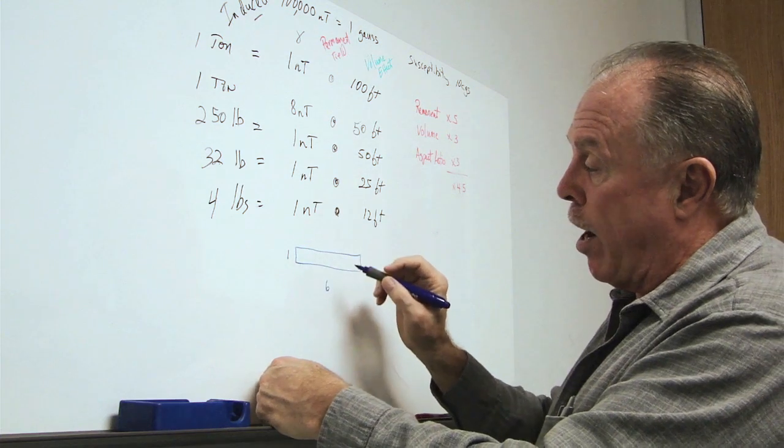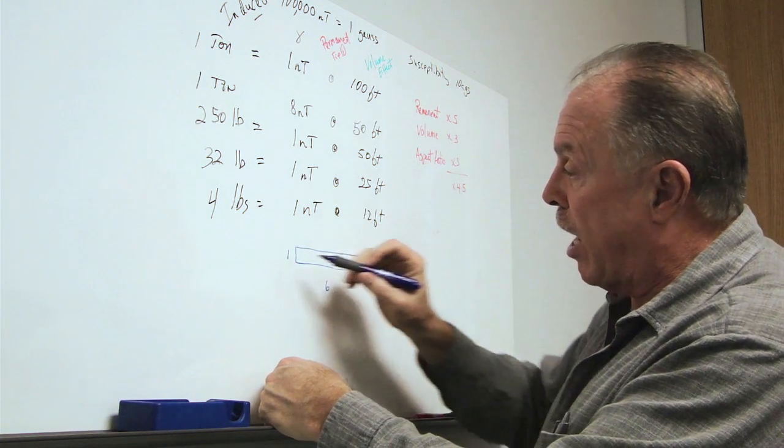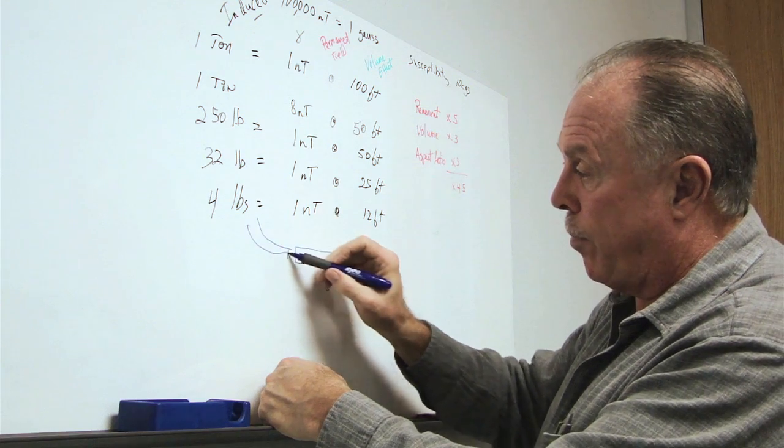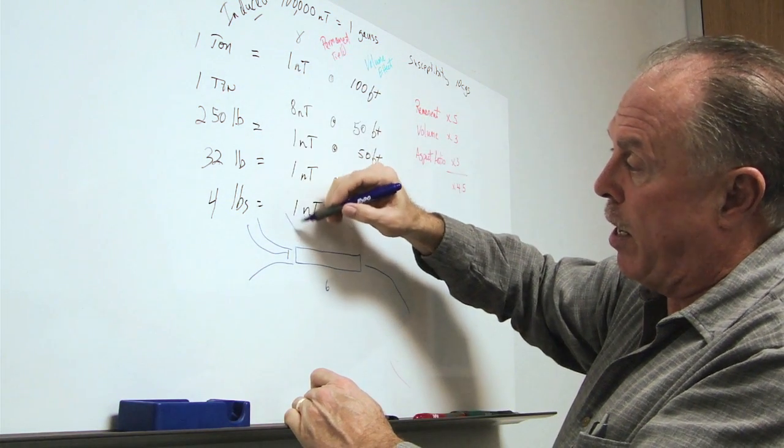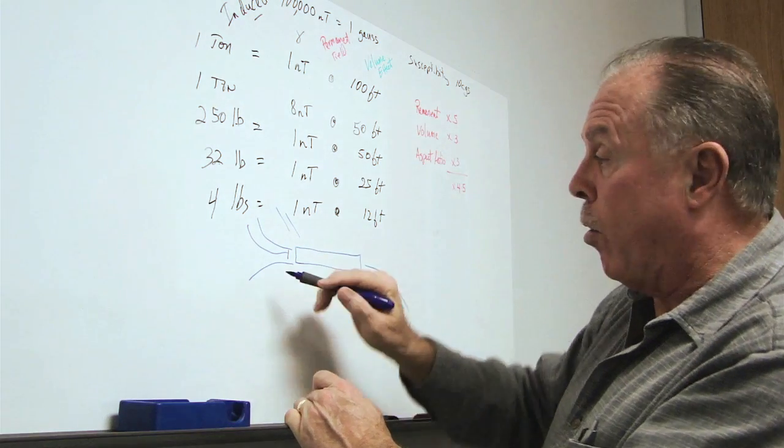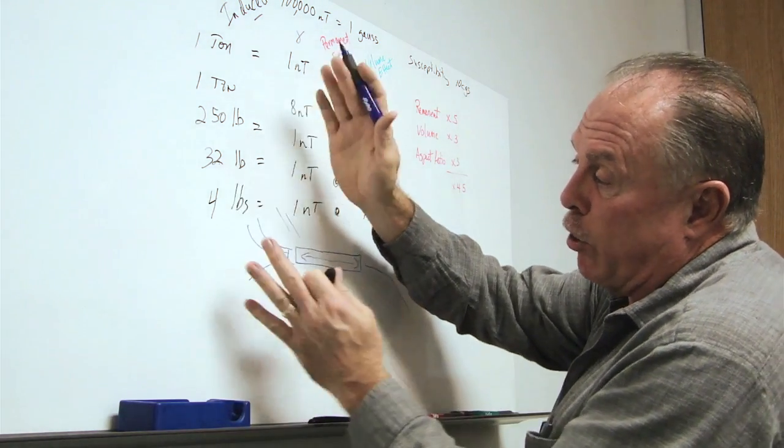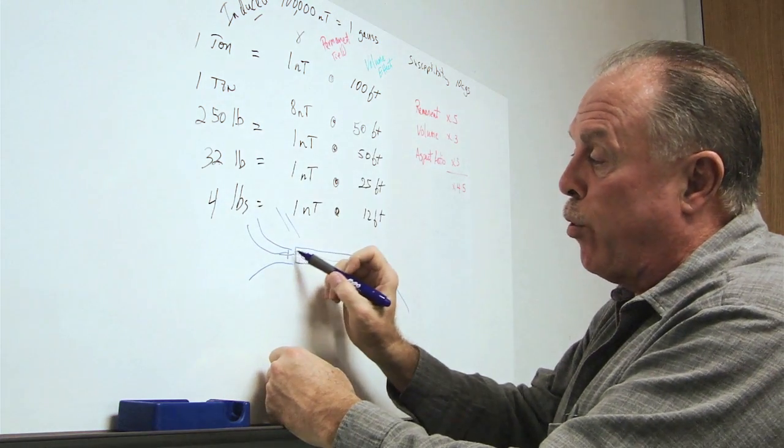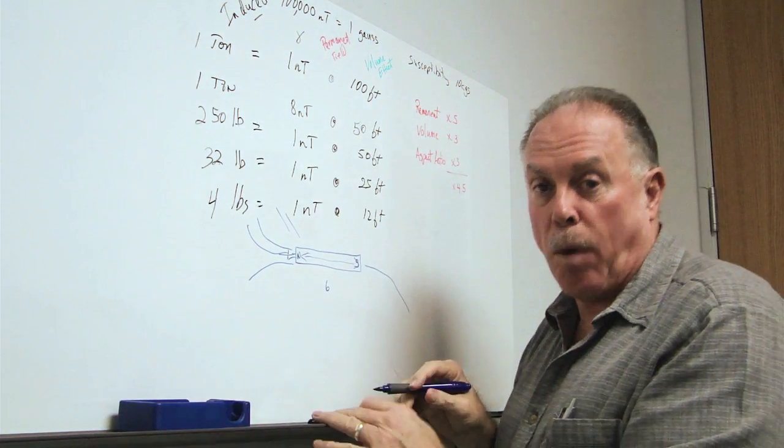Then this longer and thinner object will tend to bring the Earth's magnetic flux lines through it. And even though the Earth's magnetic flux lines may be coming at some other angle, when you have a long aspect target, it actually tends to bring the flux lines through the ends as in a north and south bar magnet.